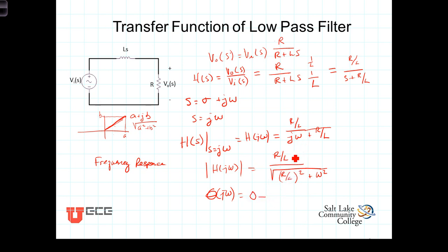minus the phase of the denominator. The phase of the denominator is the arc tangent of the imaginary part, which is omega, divided by the real part, R over L.